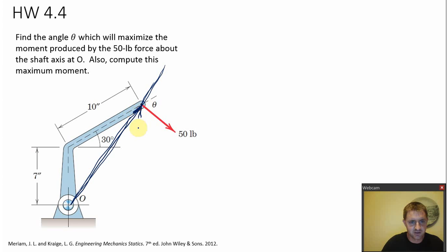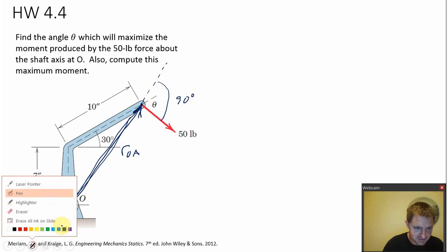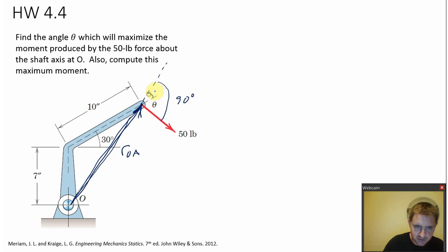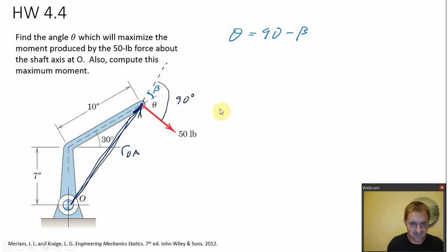This vector here is R_OA — I'll continue it with a dotted line. I know the big angle between R_OA and the force is 90 degrees. If I can find this angle — I'll call it beta — how would I find angle theta? Theta would just be 90 minus beta. So I need to find beta.